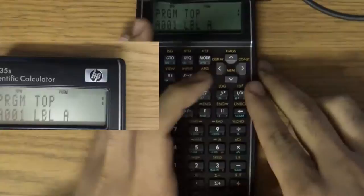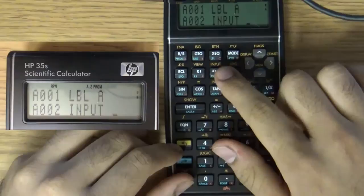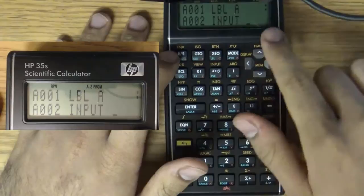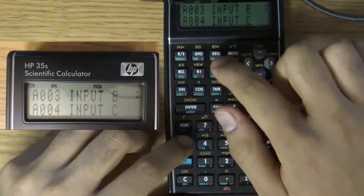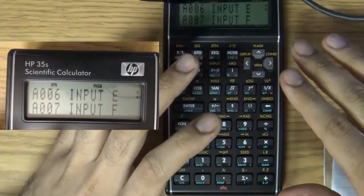How do you ask for input? Simple. Use the input function. Input. It's the yellow button plus input which is on the X and Y switch register key and we're going to want to input variable A, B, all the way through F. So, now it has all of the vectors components in memory.